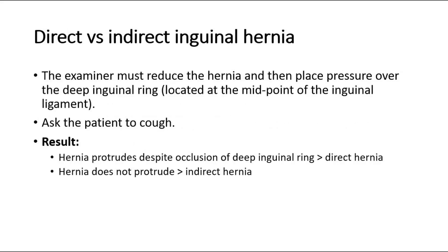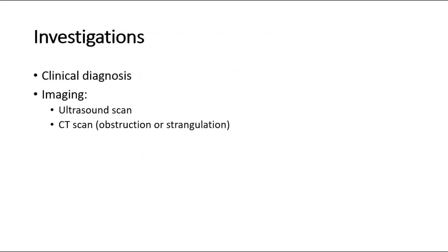To differentiate whether it is a direct or indirect inguinal hernia, we can perform the deep ring occlusion test. The examiner must reduce the hernia and then place pressure over the deep inguinal ring, located at the midpoint of the inguinal ligament, then ask the patient to cough. If the hernia protrudes despite occlusion of the deep inguinal ring, it is a direct hernia. If the hernia does not protrude, the deep ring occlusion test is positive, suggesting indirect hernia, because in indirect hernia the bowel enters via the deep inguinal ring.